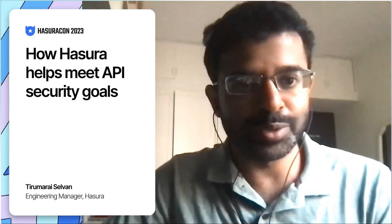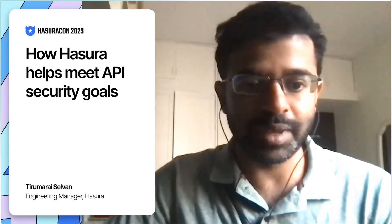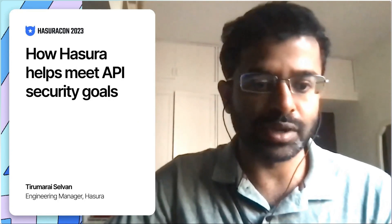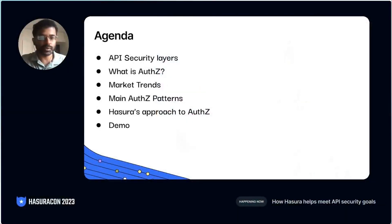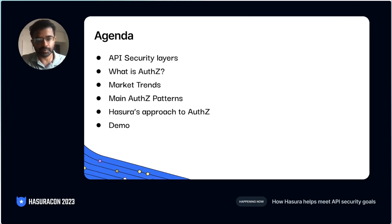Hey everyone, welcome to my talk on how Hasura helps meet API security goals. My name is Thiru and I'm an engineering manager here at Hasura. First, I want to start off with an overview of our agenda today. We'll look at the various layers in API security infrastructure. Then we will focus on authorization, which is the hardest part of API security.